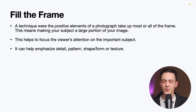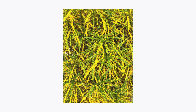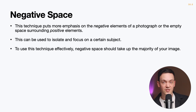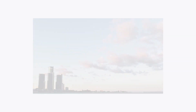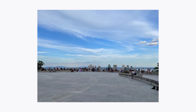Filling the frame encourages you to get close to your subject and make your subject take up the entire or most of your image. This can be used sparingly to crop unimportant elements out of your frame, or used to go extremely close to a subject and fill the entire frame, emphasizing detail, pattern, shape, form, or texture. Opposite to filling the frame, negative space puts more emphasis on the empty space surrounding positive elements. Negative space can be used to isolate a subject and focus the viewer's attention, and is commonly used in portrait photography.